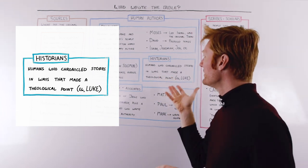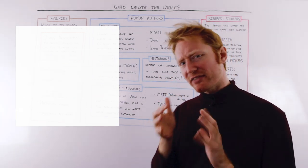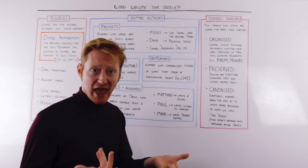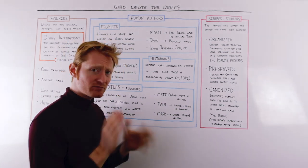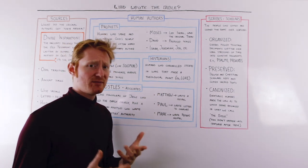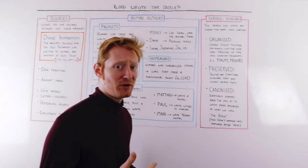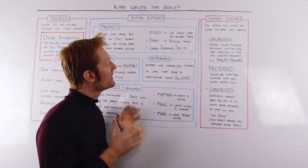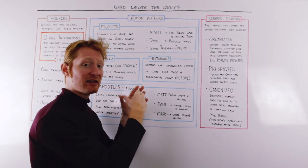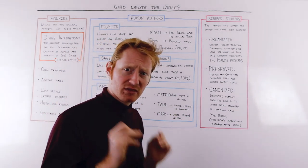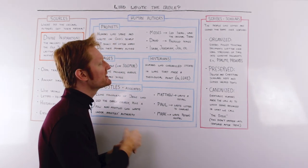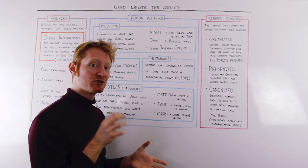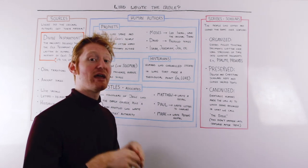We have historians. These are people who chronicled the stories in ways that made a theological point. Luke is a really good example of this. He wrote the books of Luke and Acts. But we also have Old Testament historians as well. When we look at the books of Joshua and Judges, Samuel and Kings, Chronicles, Ezra and Nehemiah, these are stories that are telling the history of Israel, but they're telling it in a way to make certain theological points. So it's not necessarily that they were historians the way we would think of historians today. They're theological historians. They are trying to teach a spiritual truth in the way they're arranging history.